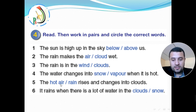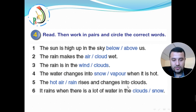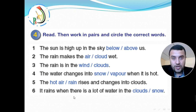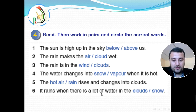Five: the hot air or the rain rises and it changes into clouds. What rises up — the rain or the hot air? Six: it rains when there is a lot of water in the clouds or snow. It rains — when does it rain? It rains when there is a lot of water in the clouds or snow.